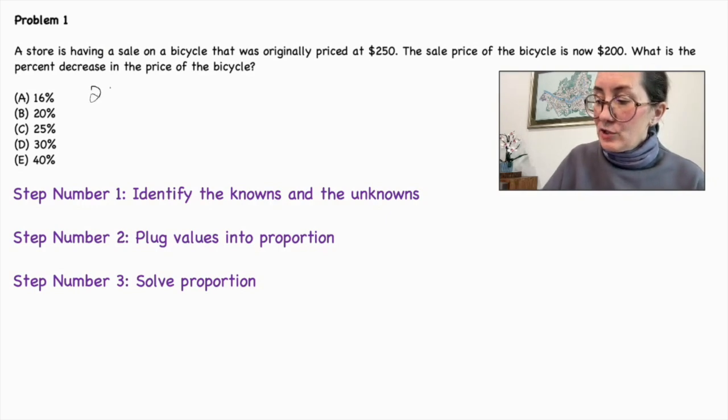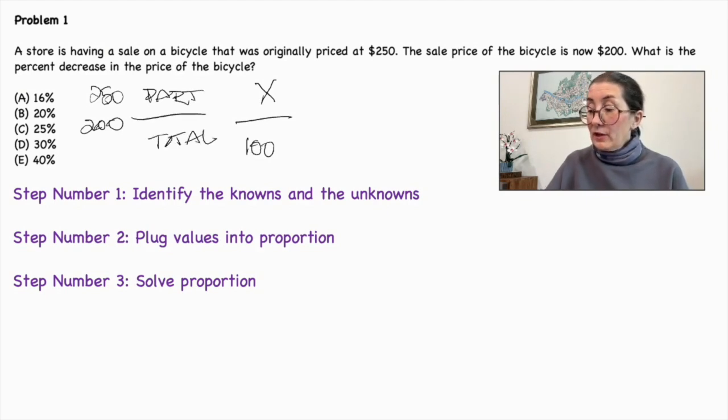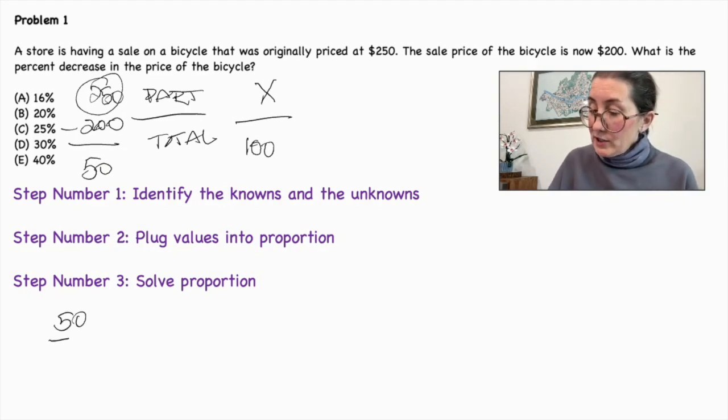We know the original price is $250 and the sales price is $200. We do not know the percentage of the discount, which is X over 100. So we need to find the part over the total. In order to find the part, we know the total is $250. And in order to find the part, we need to take away the sales price. So that is $50. So our equation becomes $50 over $250 is equal to X over 100.